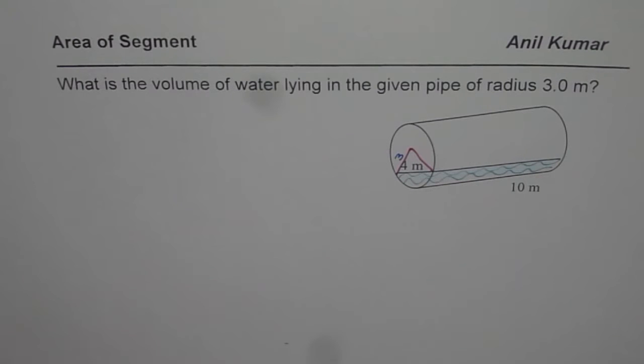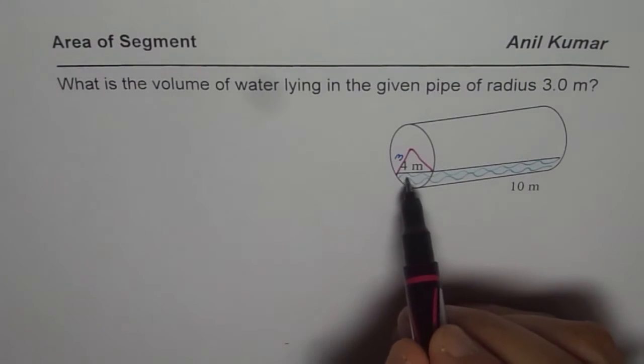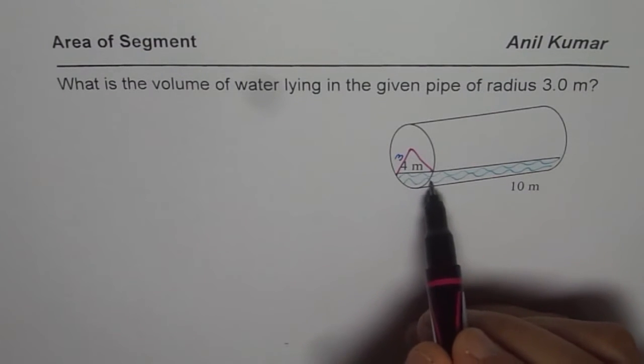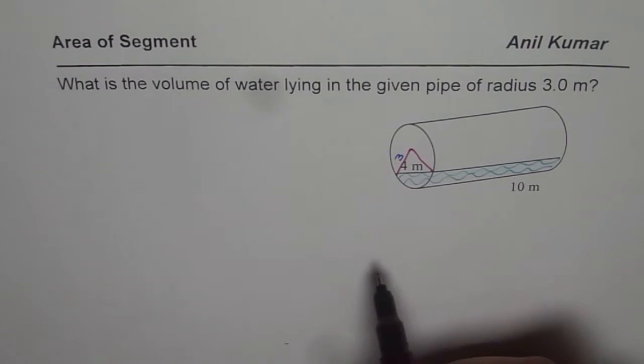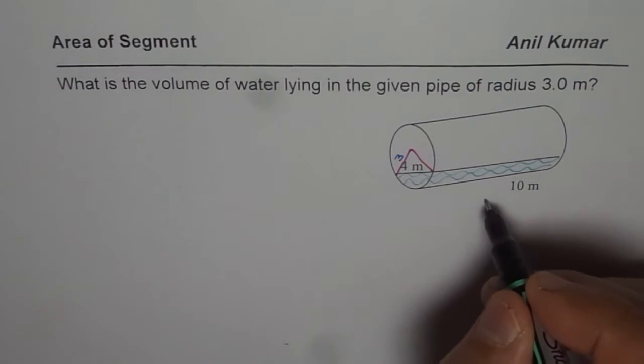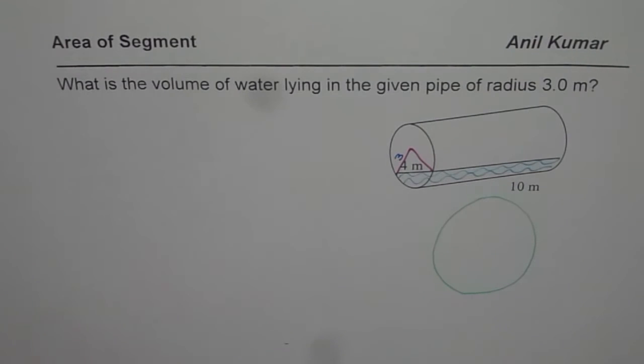We need to find volume of the water, so to find the volume of the water what we can do is we can find area first of the water. This is called a segment, and then multiply with the length of 10 meters to get the volume.